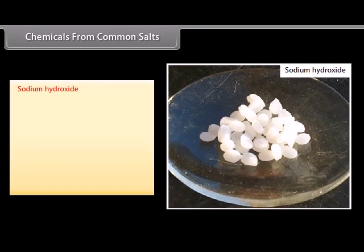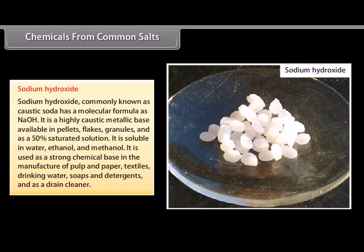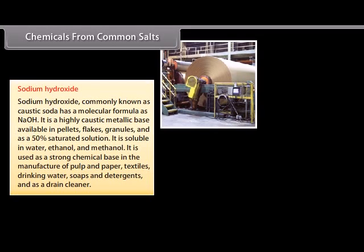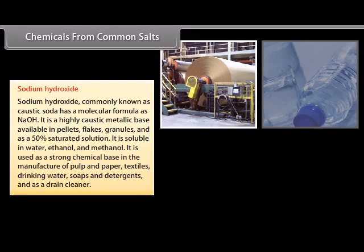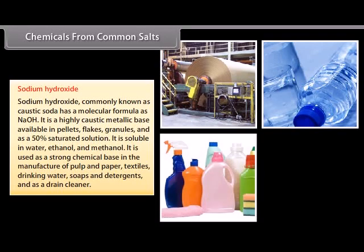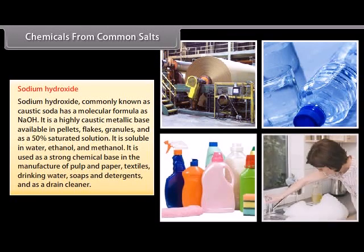Sodium hydroxide. Sodium hydroxide, commonly known as caustic soda, has a molecular formula as NaOH. It is a highly caustic metallic base available in pellets, flakes, granules and as a 50% saturated solution. It is soluble in water, ethanol and methanol. It is used as a strong chemical base in the manufacture of pulp and paper, textiles, drinking water, soaps and detergents and as a drain cleaner.